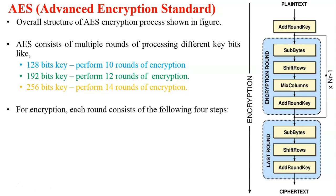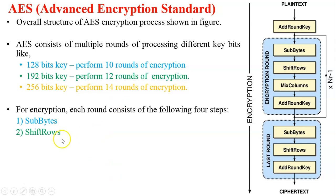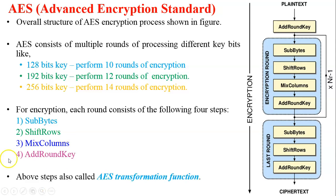During each round of encryption, there are four steps. First is SubBytes — we substitute numbers from the S-box during encryption, and use the inverse S-box during decryption. Second is ShiftRows, which is a permutation or transposition. Third is MixColumns. Fourth is AddRoundKey. These steps are also called AES transformation functions. Note that in the last encryption round, MixColumns is omitted.